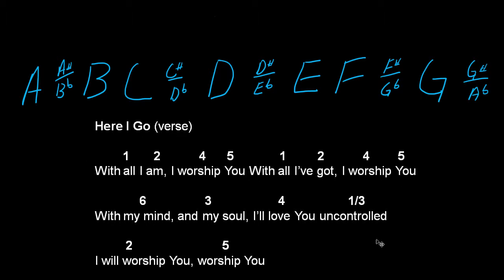So let's pick a key. The first key we'll pick is A, which is easy. You have to go and number out these charts using the formula for a major scale, which is: root, whole, whole, half, whole, whole, whole, half. So if we're in the key of A, the root is here — that's number one.